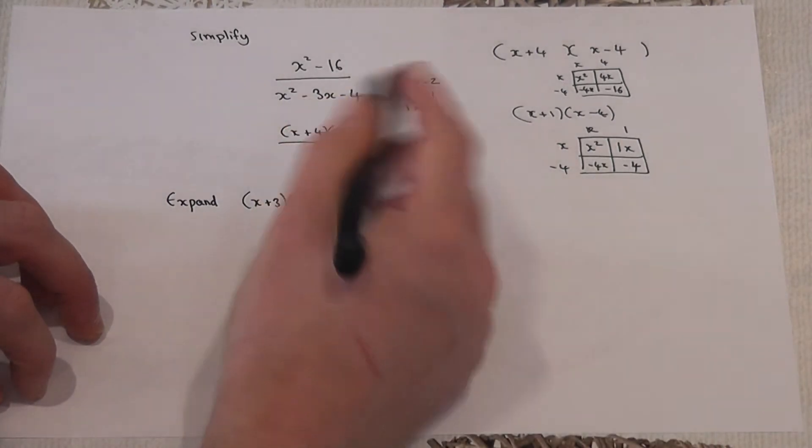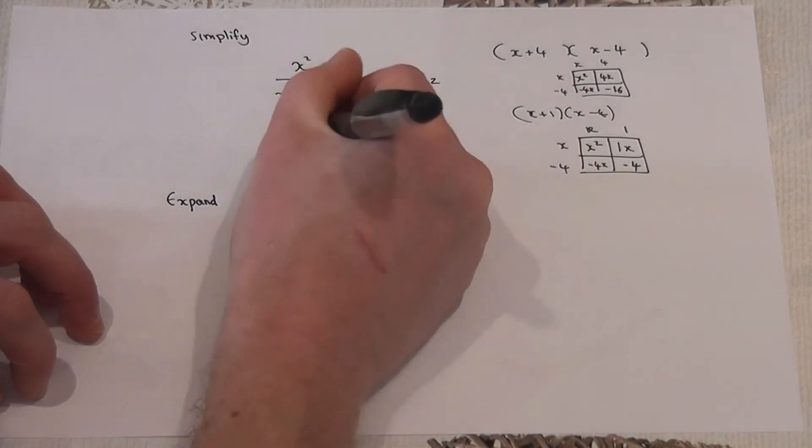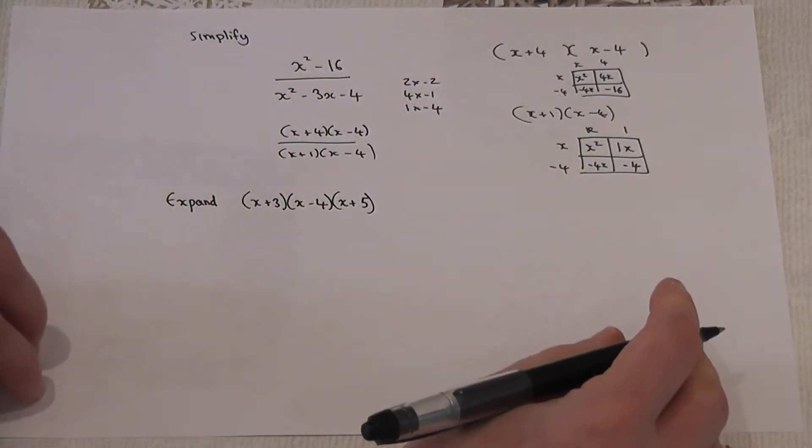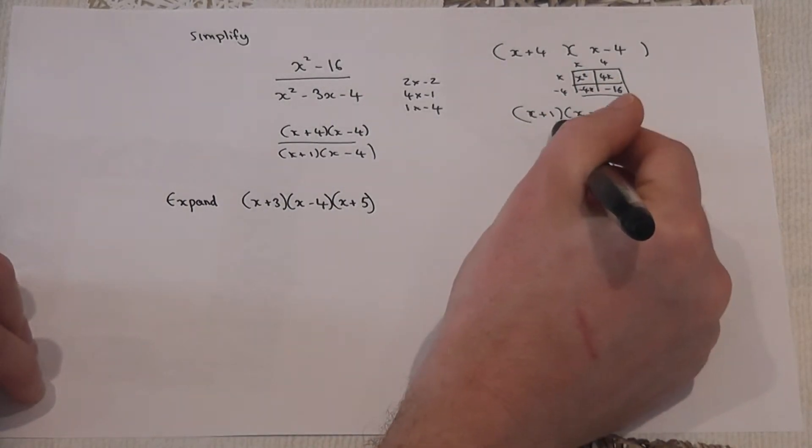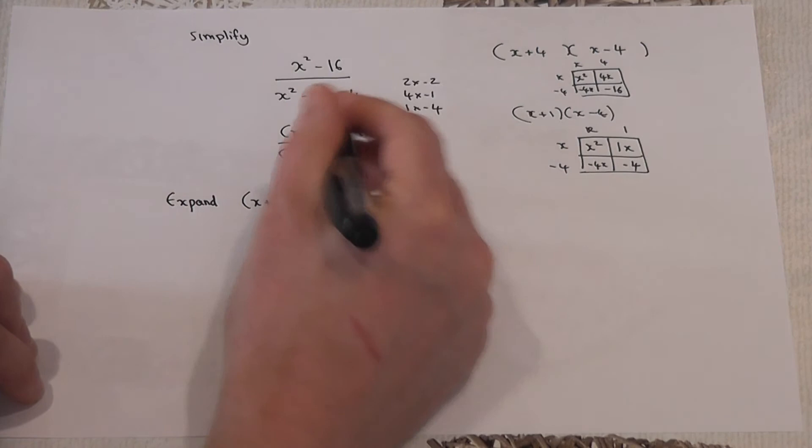So therefore, this factorizes to x plus 1 and x minus 4. So the idea here is to play around with numbers until you get the one which expands to give you the right expression.